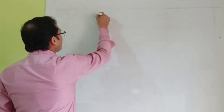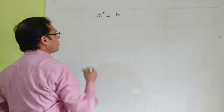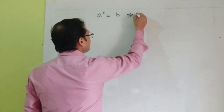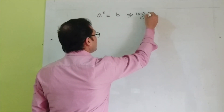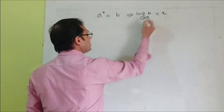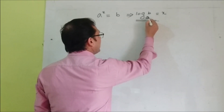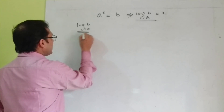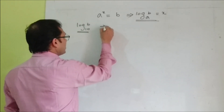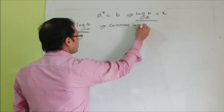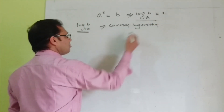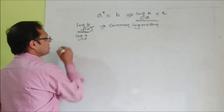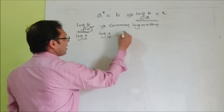If a to the power x is equal to b — this is the exponential form — you express it into logarithmic form: log b to the base a is equal to x. If in this logarithm a is equal to 10, then we get log b to the base 10. When the base is 10, the logarithm is known as common logarithm. So log 2 to the base 10, log 3 to the base 10, log x to the base 10 — these are all common logarithms since the base is always 10.